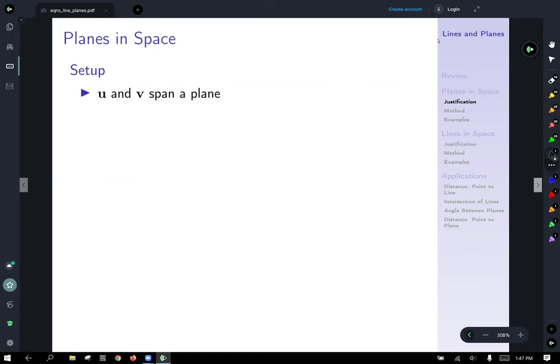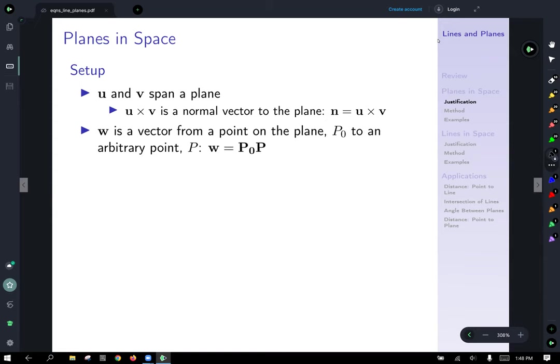So the setup for planes in space is that you need two vectors, any two vectors. And from any two vectors, you can create a plane. We know that u cross v, if you have two vectors on the same plane, gives you a normal vector to that plane. So we'll call that n, n is equal to u cross v. And w is a vector from a point on the plane, p0, to an arbitrary point, p. And w would be the vector from initial point p0 to point p arbitrary.